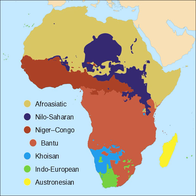Khoisan languages are concentrated in the Kalahari Desert of Namibia and Botswana. Niger-Congo languages cover West, Central, Southeast and Southern Africa.